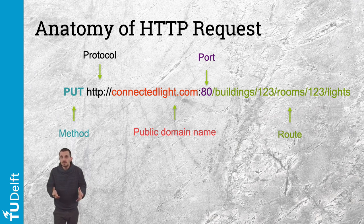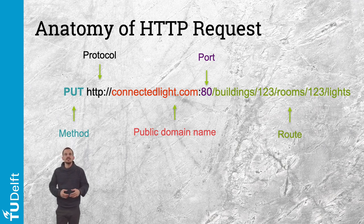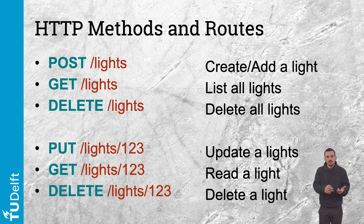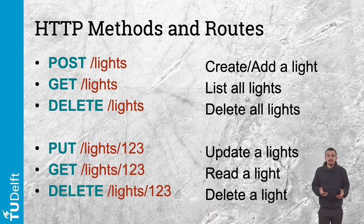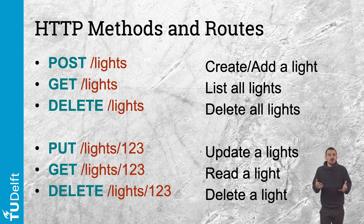Each HTTP request has a specific method, also called the verb of the request, defining the action. The most common are POST, PUT, GET, and DELETE. Taking the example of the light bulb described in the demo, with only one route like slash lights, we could expose three different actions.